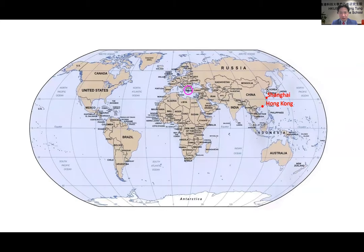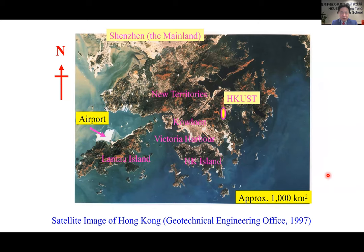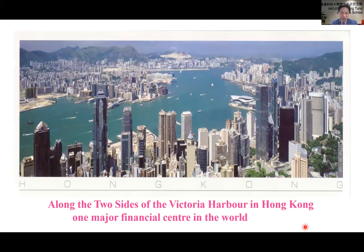I'm from Hong Kong, which is located at the southern coast of China, and the distance between Greece and Hong Kong is about 7,000 kilometers — not that far. This is a satellite image of Hong Kong, which consists of Hong Kong Island, Kowloon Peninsula, New Territory, and Lantau Island. If you come to Hong Kong, you will land at the airport and travel by car to reach our campus in about 45 minutes. Hong Kong is one of the major financial centers in the world.